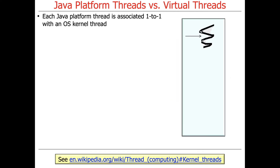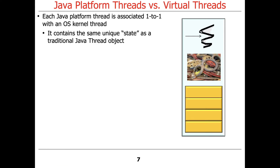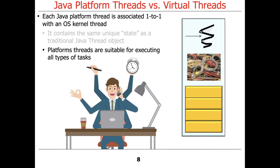Each Java platform thread is associated one-to-one with an operating system kernel thread. For example, if you're running your Java execution environment on Android, it'll be using Android Linux kernel threads. If you're running it on Windows, it'll be using Windows kernel threads. If you're running it on Solaris, it'll be using Solaris kernel threads. Each Java thread will have its own OS kernel thread, and platform threads contain essentially the same unique state as traditional Java thread objects do.